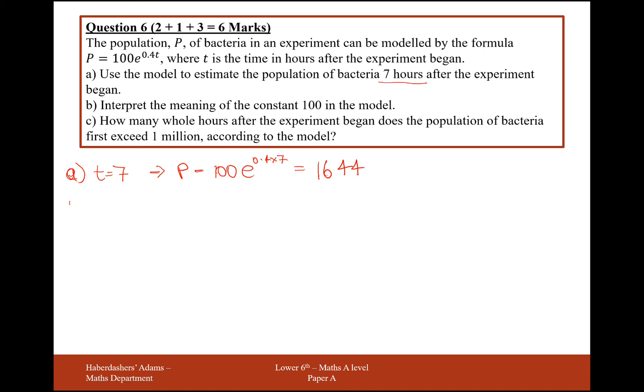Part B is interpret the meaning of the constant 100 in the model. So it's looking at this 100 here. Now, any model where we have a number times an exponential to the power of something, the 100 in this case is the initial bacteria population.